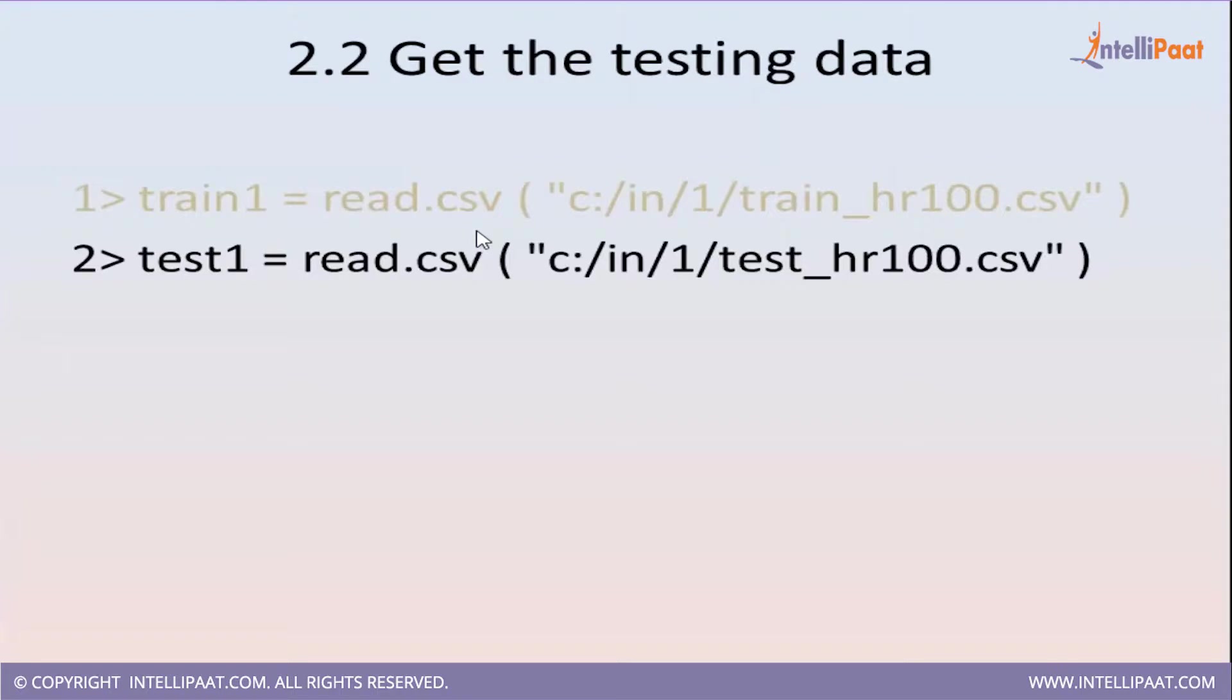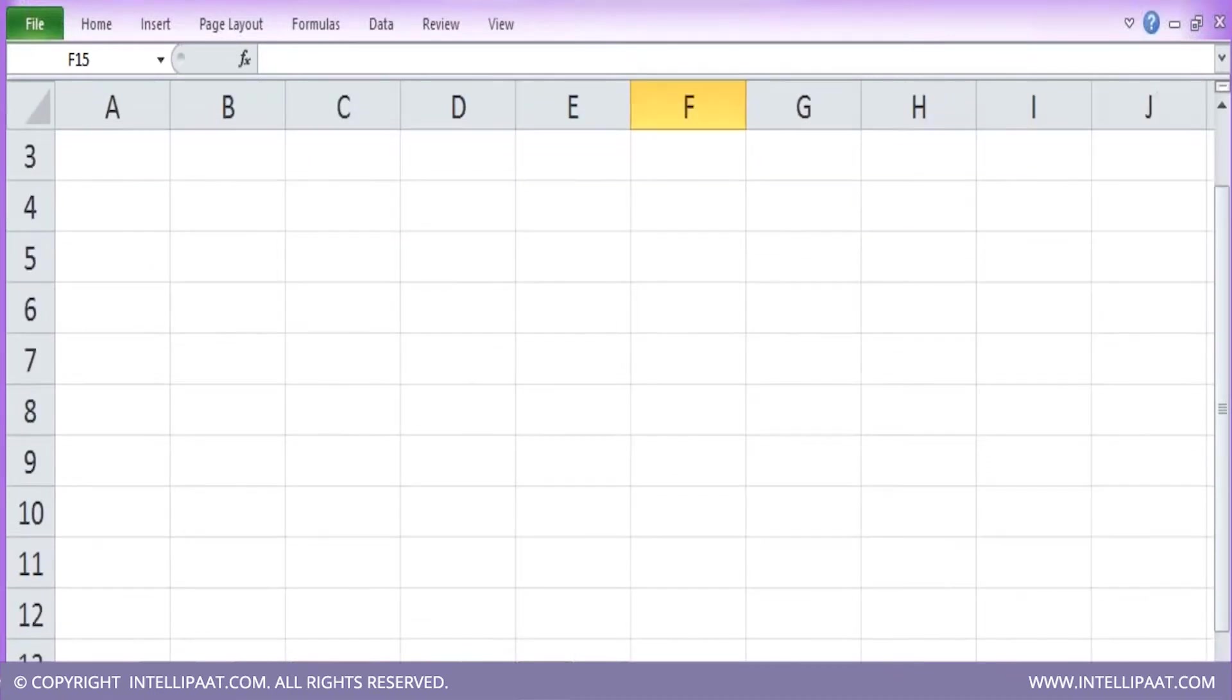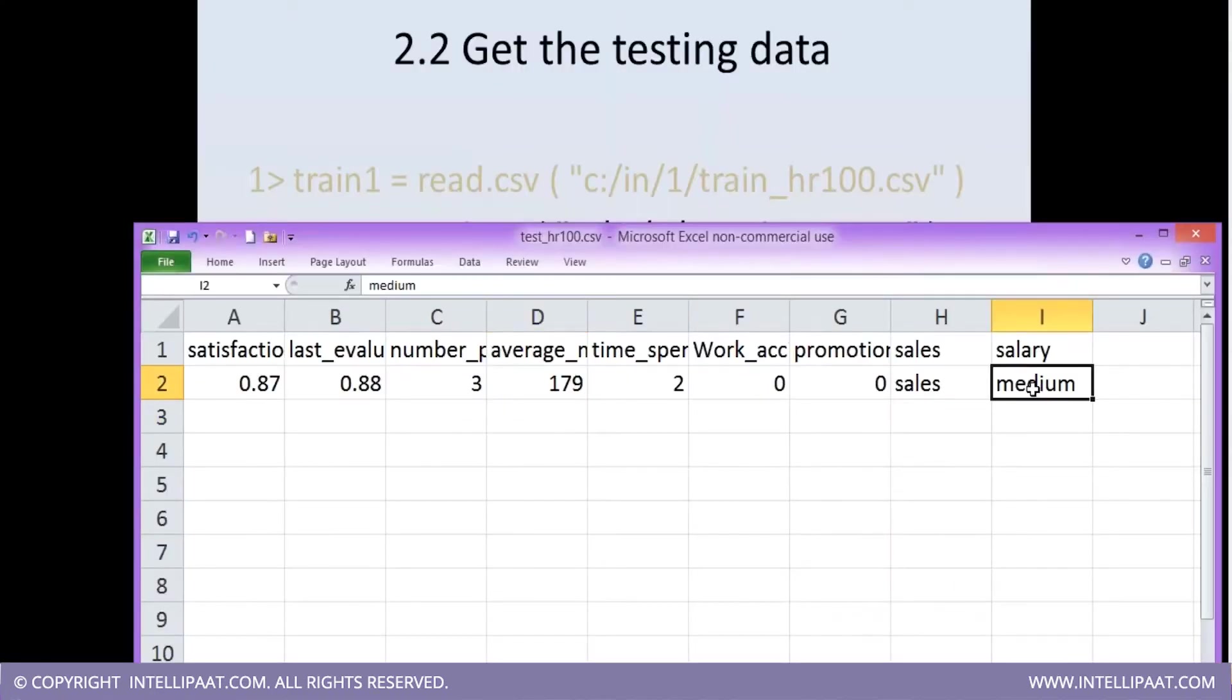Once the training data is available, the next step is to get the testing data. Testing data is in the test_hr100.csv file. Let us have a look at this. This is my testing data. There is a record of only one person.